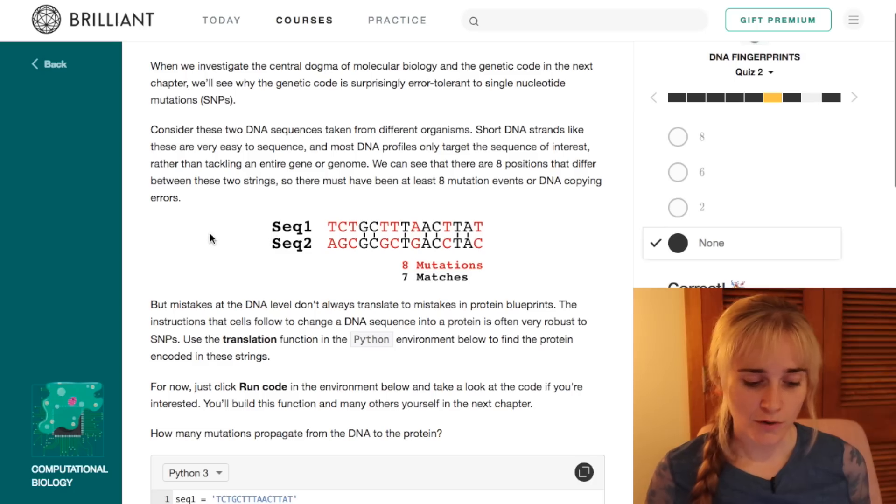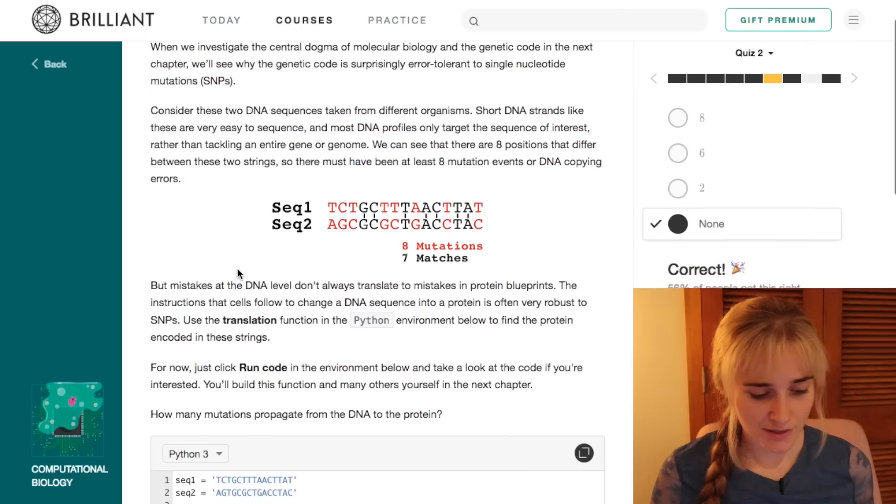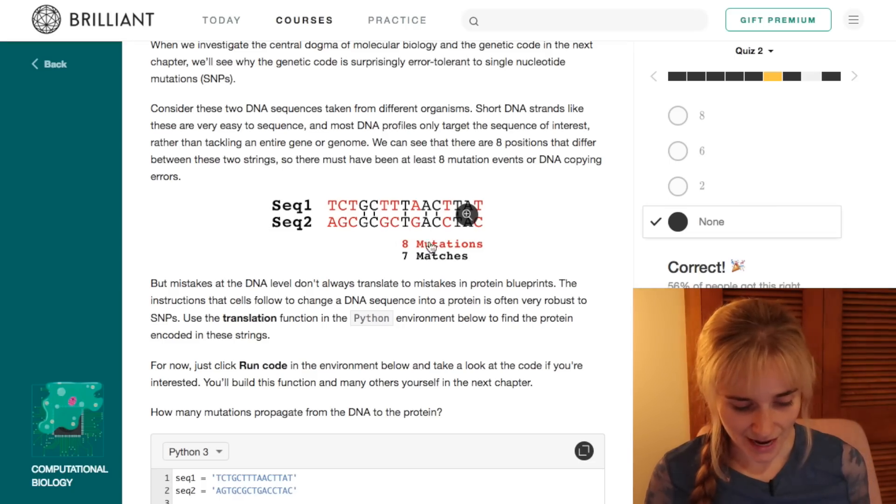So what goes on a lot in our cells is that we have to make new copies of DNA, and during that process there's always room for some mutations or for things to go slightly wrong. So you can see in this example here, we have two sequences of DNA and there are eight mutations which are in the red, so these don't match up, and there are seven matches. So at least eight mutation events have happened getting from sequence one to sequence two.